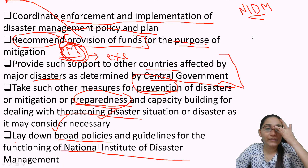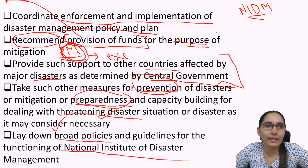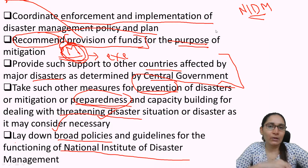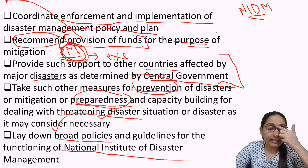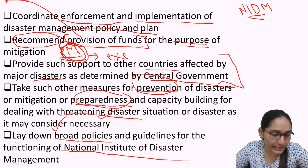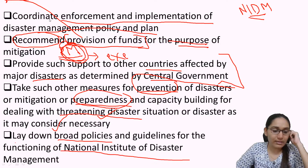We have finished this chapter on the Disaster Management Act but we are not stopping here. We will take up the next chapter because we don't have much time. The exam is scheduled from 16th onwards. We will be taking up Chapter 6 — natural and energy resources. If you have any doubts from this chapter, you can put it now.